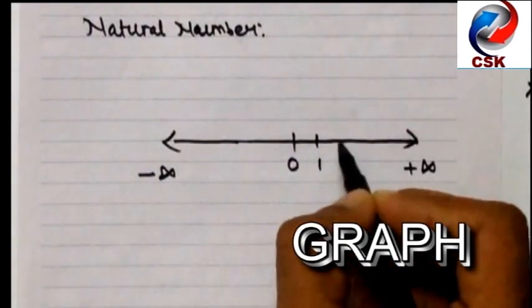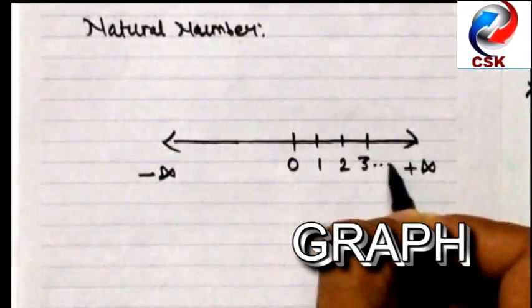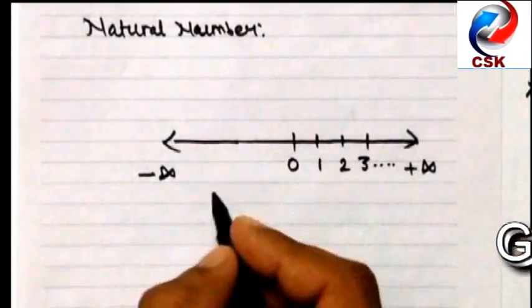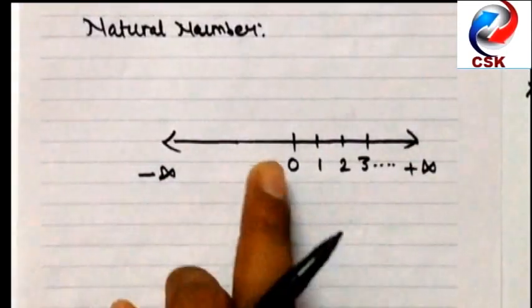So here I can draw 1, 2, 3. I can mention point 1, 2, 3. All these are natural numbers.